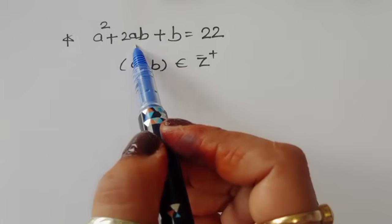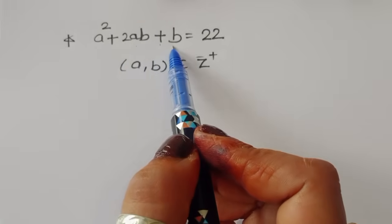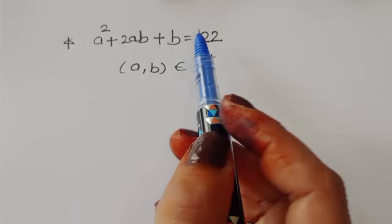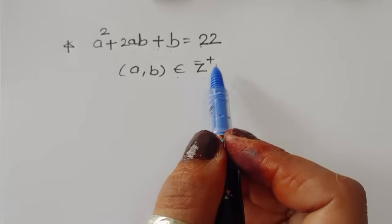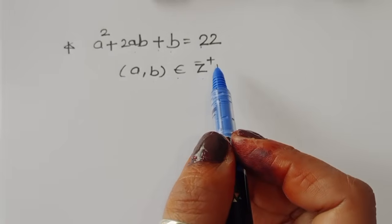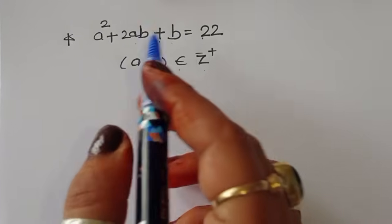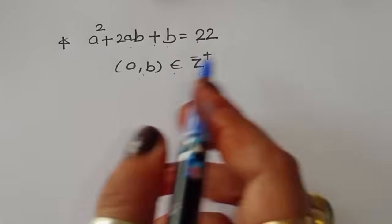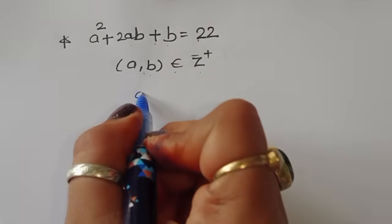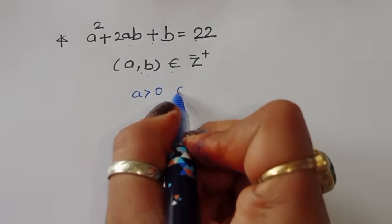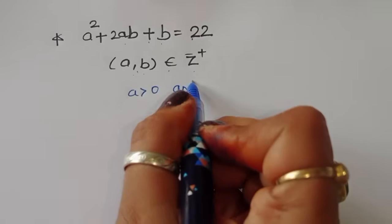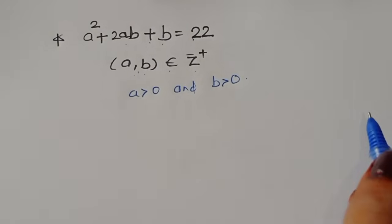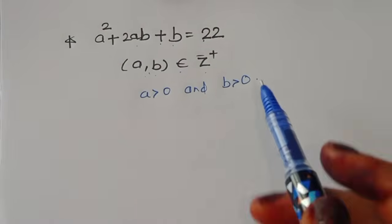The question is: given a² + 2ab + b = 22, where a and b belong to positive integers, meaning a > 0 and b > 0, we have to find out the value of ab.